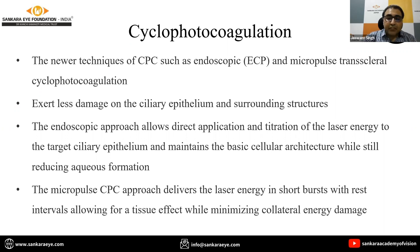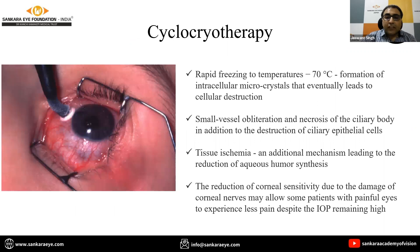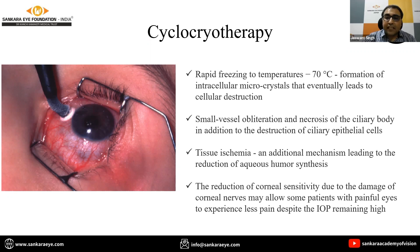The micropulse cyclo-photocoagulation approach delivers laser energy in short bursts with rest intervals, allowing a tissue effect while minimizing collateral energy damage. Cyclocryotherapy acts by rapid freezing to temperatures of around minus 70 degrees Celsius, forming intracellular micro-crystals that lead to cellular destruction, small vessel obliteration, and necrosis of the ciliary body.